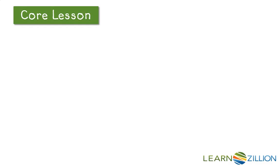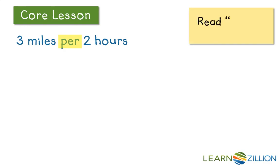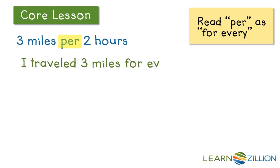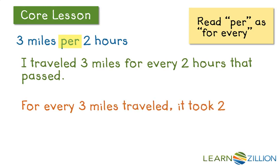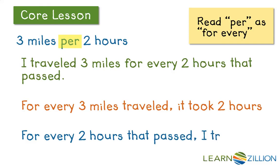Another difference you might have noticed between rates and standard ratios is the word 'per.' Three miles per two hours — per is a perfectly fine word on its own, but I like to think of 'per' as meaning 'for every.' So in my mind, three miles per two hours becomes: I traveled three miles for every two hours that passed. Or, for every three miles traveled, it took two hours. Or, for every two hours that passed, I traveled three miles. Each 'for every' takes the place of 'per.'